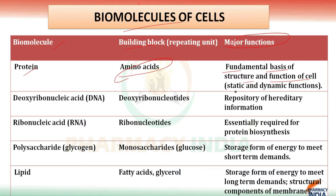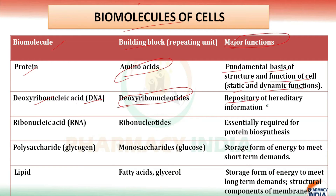The second one is DNA. The full form of DNA is deoxyribonucleic acid. The building block or repeating unit of DNA is deoxyribonucleotide. The function of deoxyribonucleic acid is that it acts as a repository of hereditary information — meaning it contains the hereditary information passed from one generation to the next.